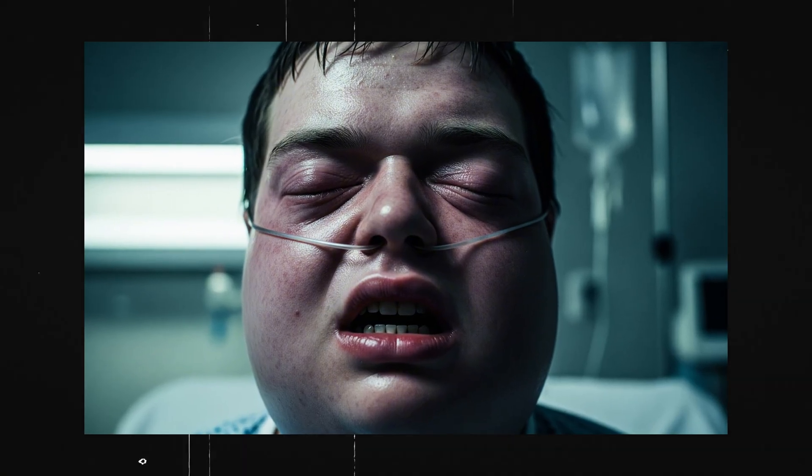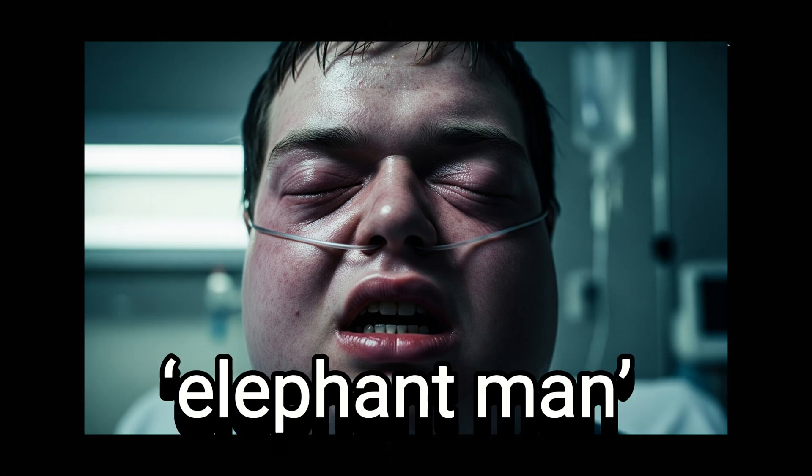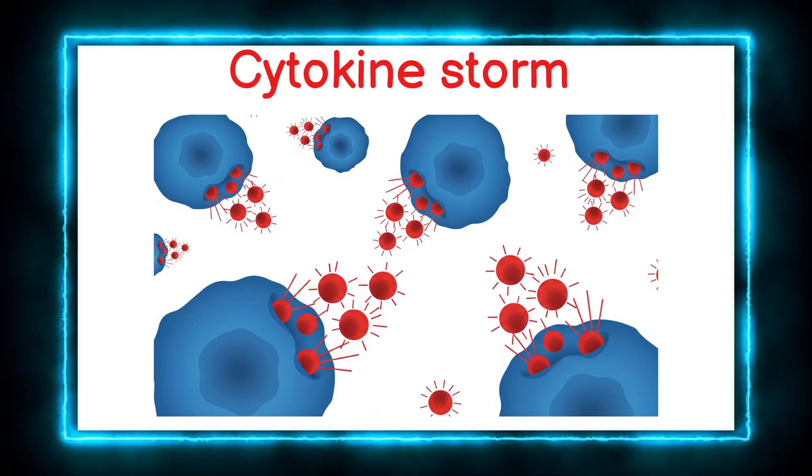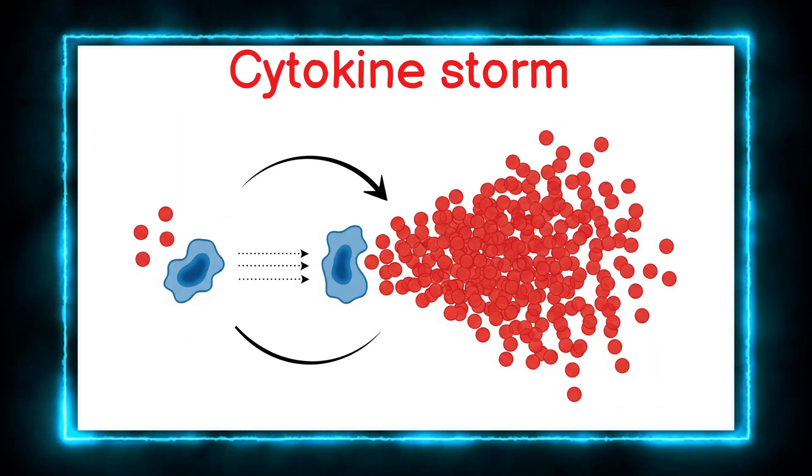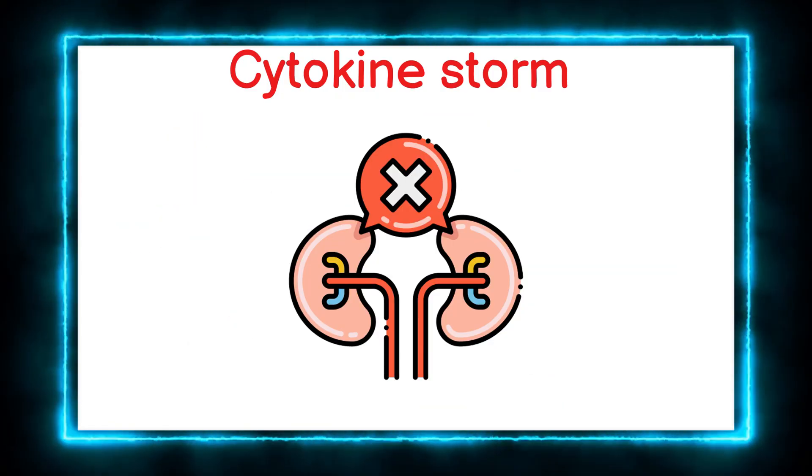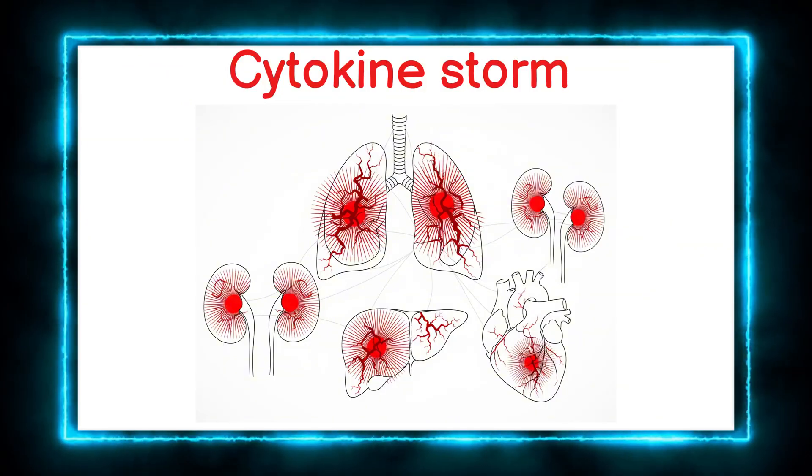The swelling was extreme. One man was nicknamed the Elephant Man for the sheer edema on his face. This was a cytokine storm. The immune system erupted, releasing a flood of inflammatory molecules that attacked the body's own tissues, leading to multiple organ failure.